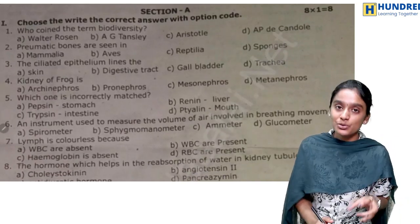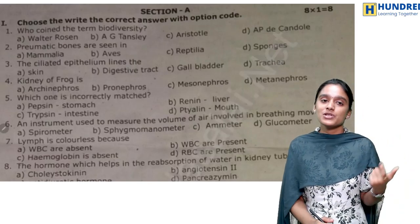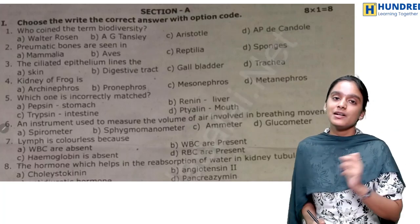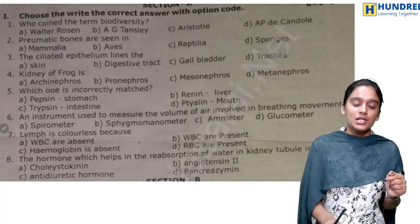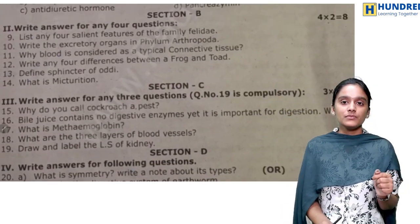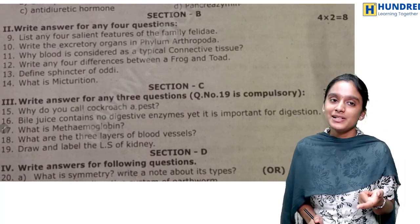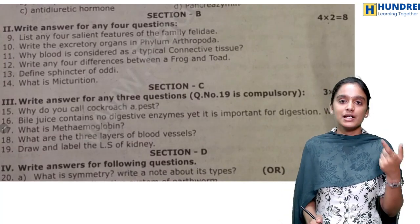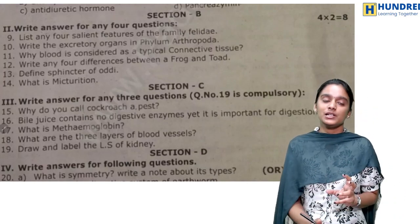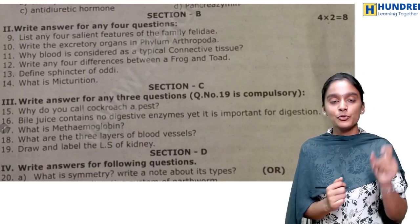You have eight questions from eight chapters. In the first chapter there are many terms coined by many scientists — you can find those. Next is Section B: two marks, you have to attend four out of six. Salient features are again a two-mark question from your book back. If you have to study excretion organs and phylum, you can highlight those.